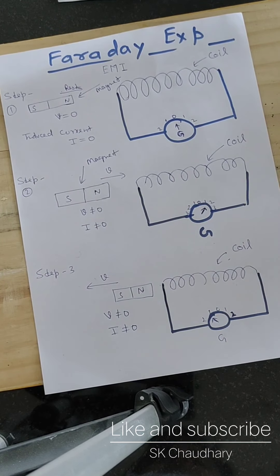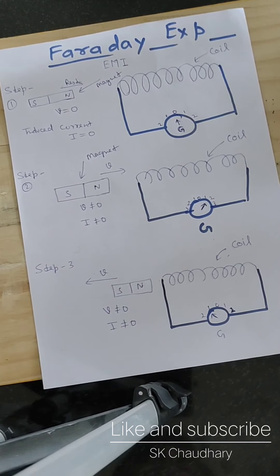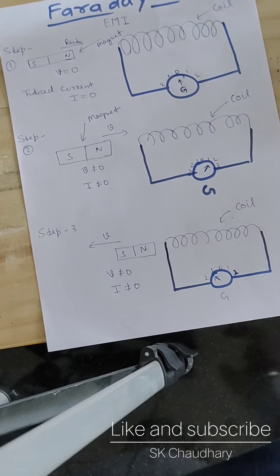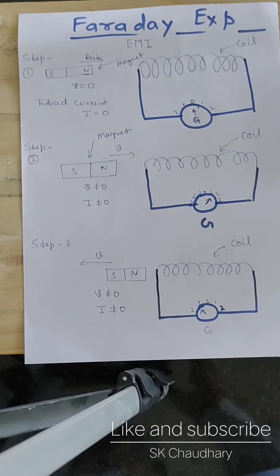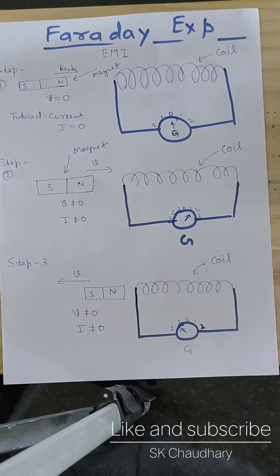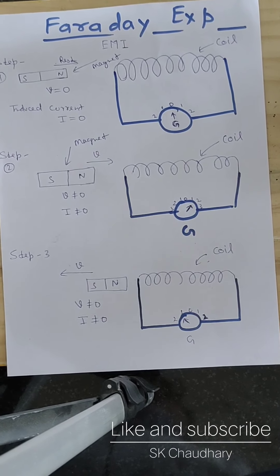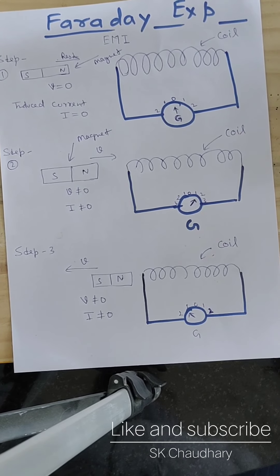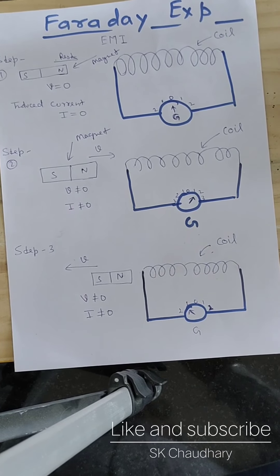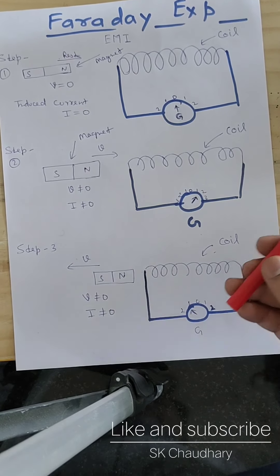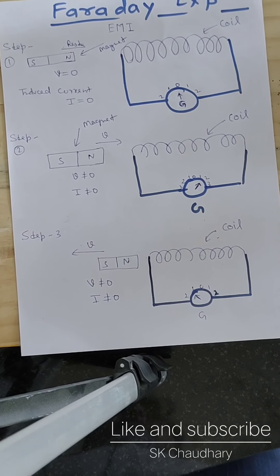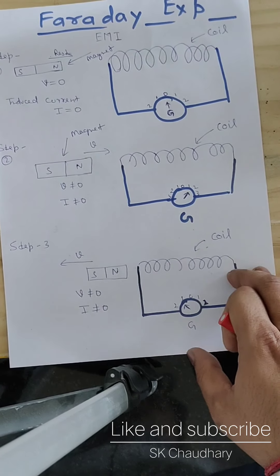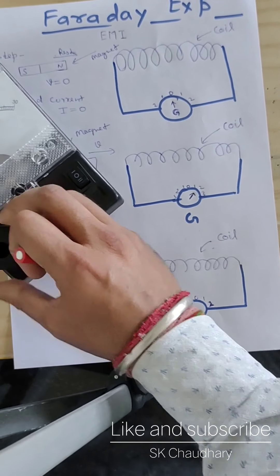Due to this experiment, revolutionary results came and the whole environment of electrical production changed. Faraday did a very great job in efficiently producing current. The current, which was previously available only to a few people in the world, was made accessible everywhere. It is around 1867 that Faraday made a very great contribution to our electrical environment and scenario.